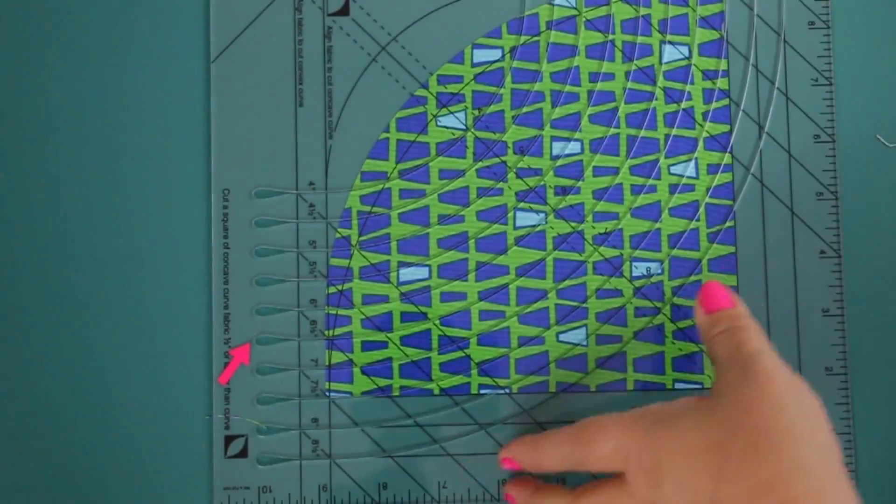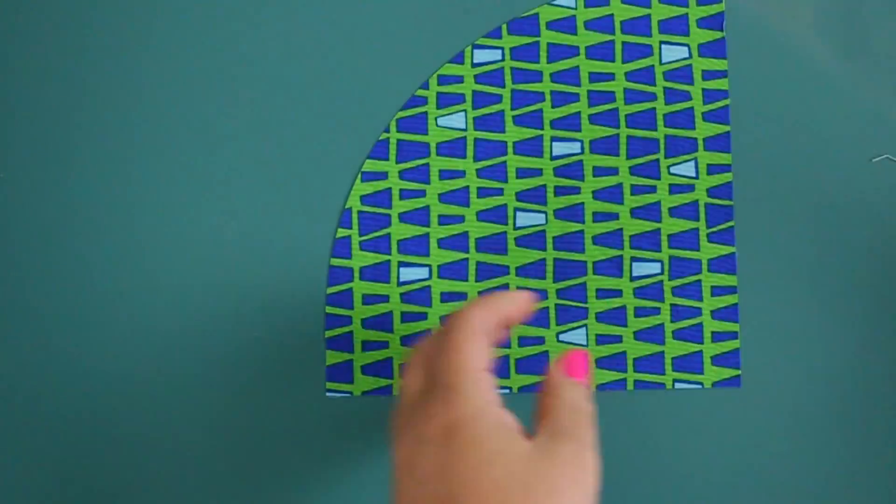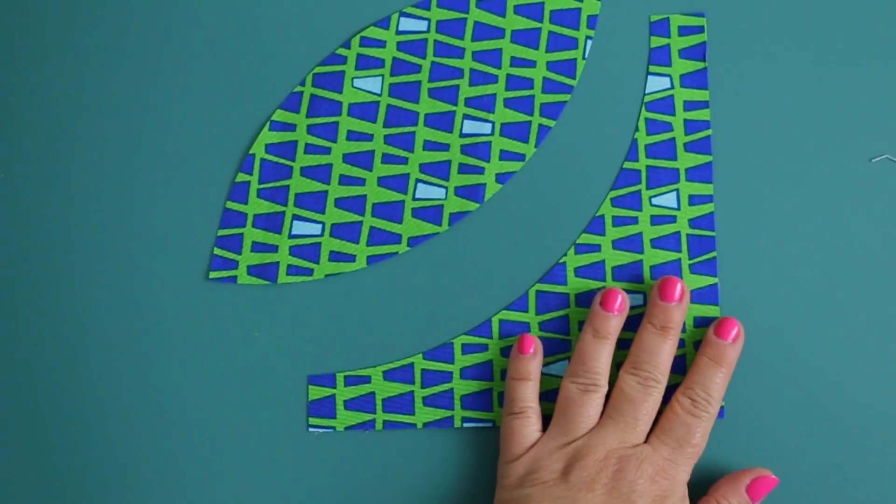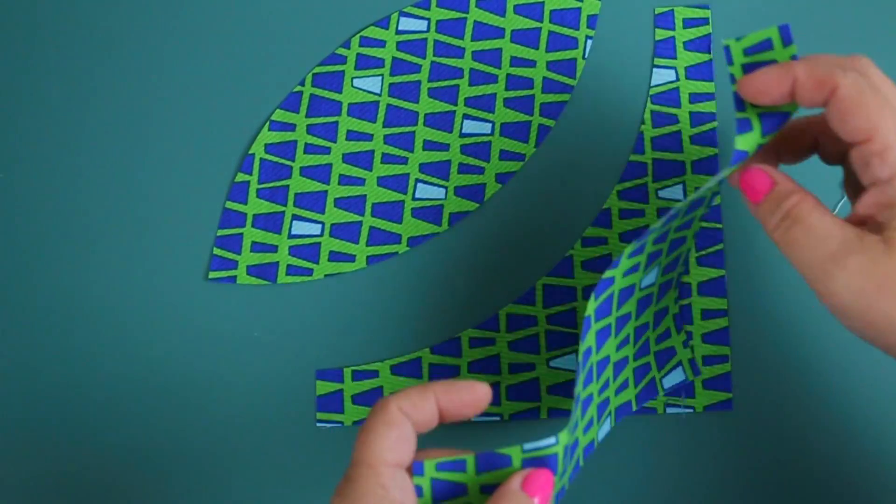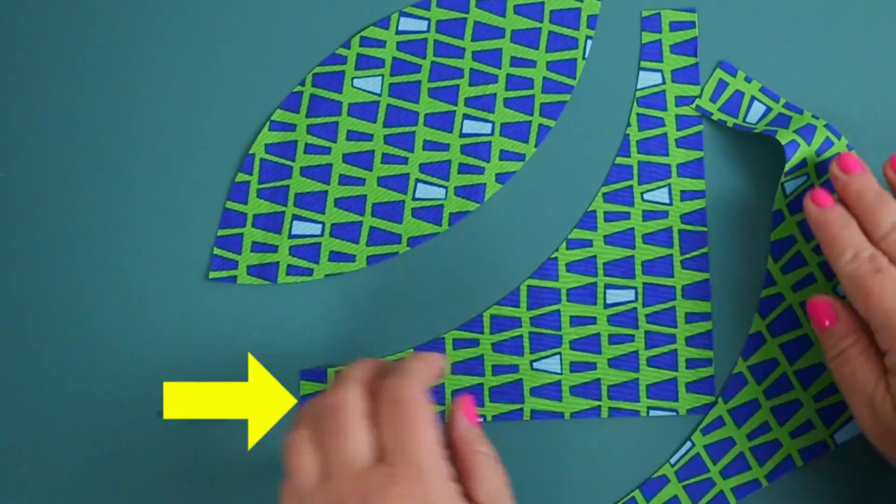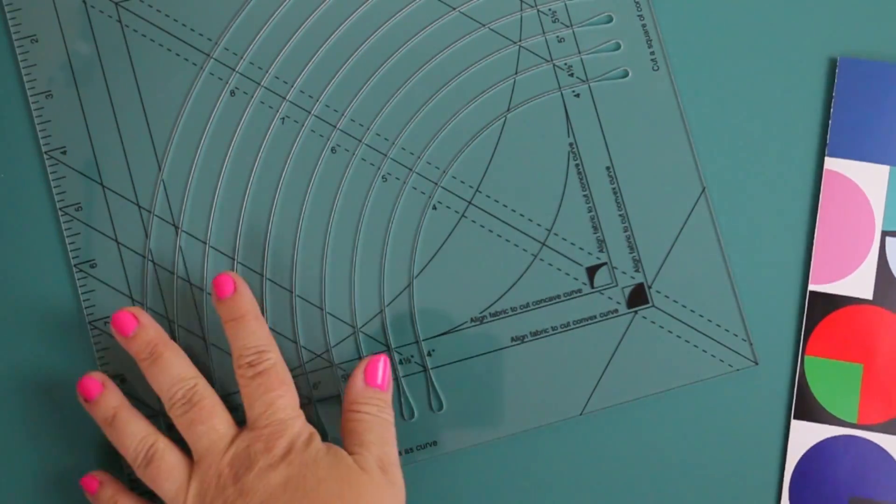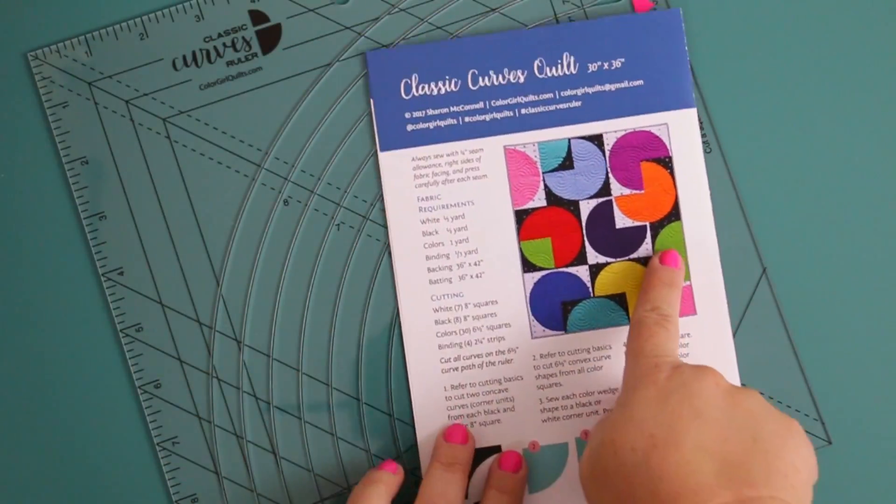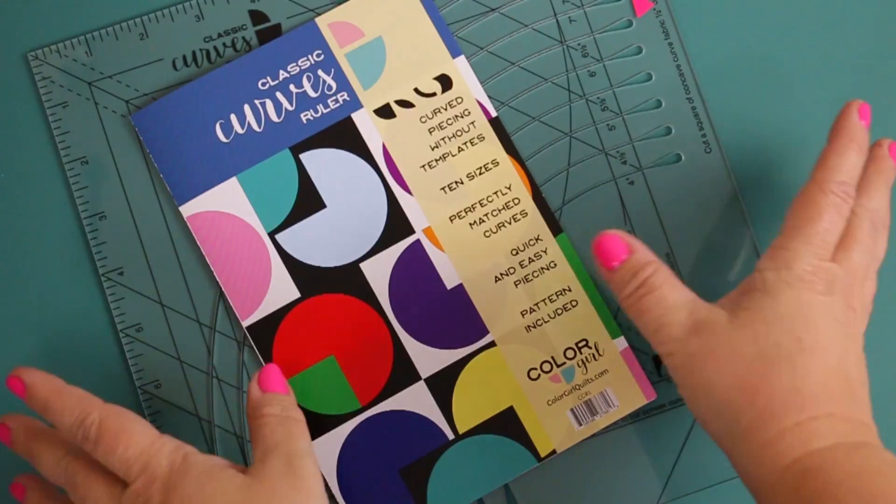And there we go. We're cutting at the six and a half inch curve. And what you are left with is a scrap, which you can use in other quilt blocks. And you are left with two identical matching concave curves. And what's really cool is on the back of the instructions, Sharon actually includes a pattern. So now that you take all the things you've just learned and make a quilt.